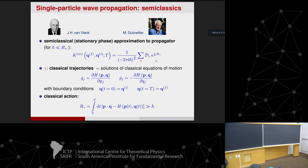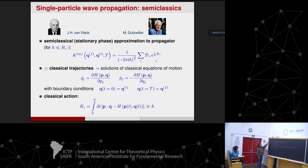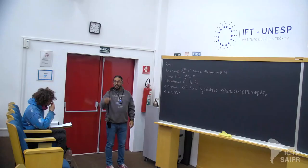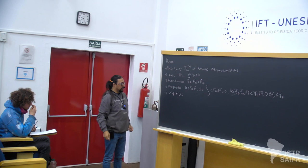Brief reminder from yesterday: bosonic many-body quantum systems live in a space called Fock space, which accounts for the bosonic nature, indistinguishability, and bosonic symmetry. The natural basis there is occupations. The Hamiltonian has two pieces: one-body terms and two-body terms. One-body terms are bilinear in creation and annihilation operators; two-body terms are fourth order.